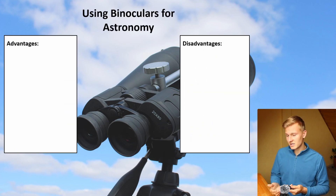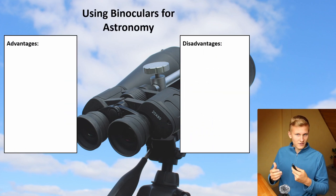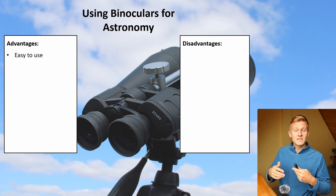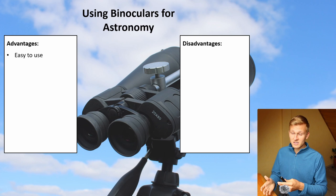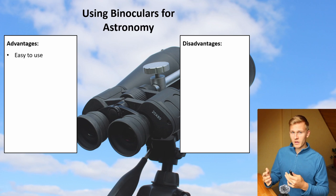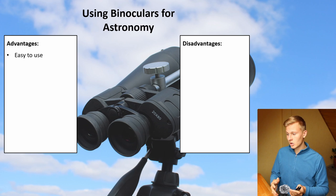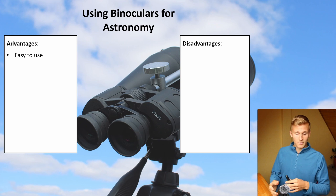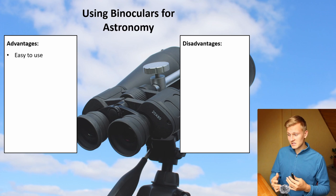Now let's get started. The very first advantage is that binoculars are very easy to use. When comparing telescopes with binoculars, you will quickly realize that telescopes are quite hard to use. Some of them need a polar alignment process to work, and a lot of these telescopes need special software to run. So in general, telescopes are quite complex. But on the other side, binoculars are very easy to set up.